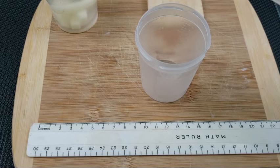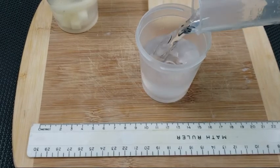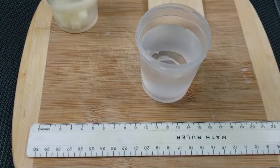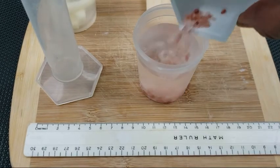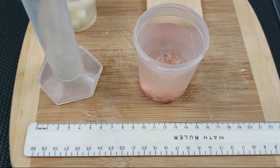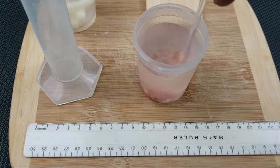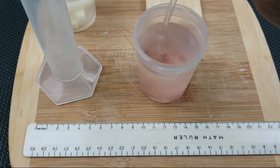Procedure: Use the marker to label two containers, one and two. Add 100 milliliters of distilled water to each container. Weigh five grams of salt and add it to container two. This is your 5% salinity solution. Mix the solution using the spoon until all the salt is dissolved.